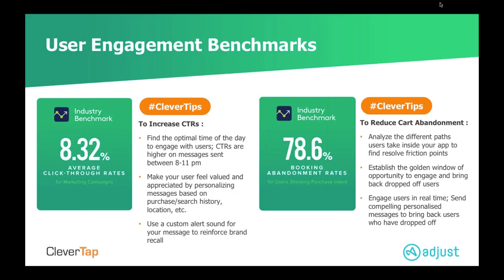Click-through rates help measure the effectiveness of your marketing campaigns and whether your messages are prompting users to open your app. We're seeing around 8% average click-through rates for campaigns in the travel industry. Ways to increase these numbers: find the optimal day and time to engage with users — we see click-through rates are higher on messages sent between 8 and 11 p.m., as people are likely planning travel for the next day as they wind down. Make your user feel valued and personalize the message — mention their name, mention their interests based on previous experience — to create the most personalized, non-spammy experience possible.